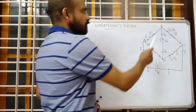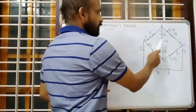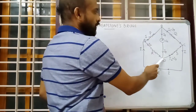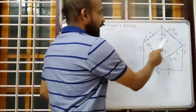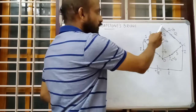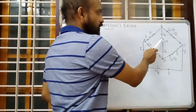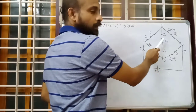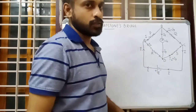Now there are two pairs of corners. B and D are one pair of corners, and A and C are the other pair. Across B and D, we have connected the galvanometer. Across A and C, we have connected the cell. So in the quadrilateral shape, across two corners we have connected a cell, and across the other two corners we have a galvanometer.